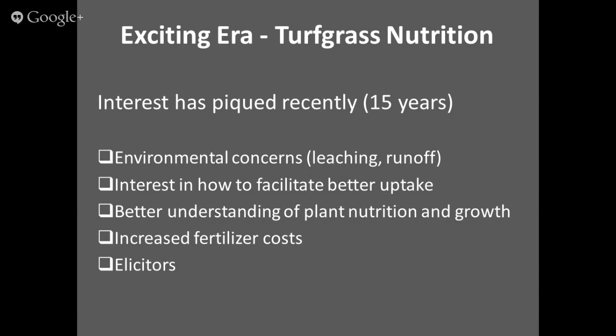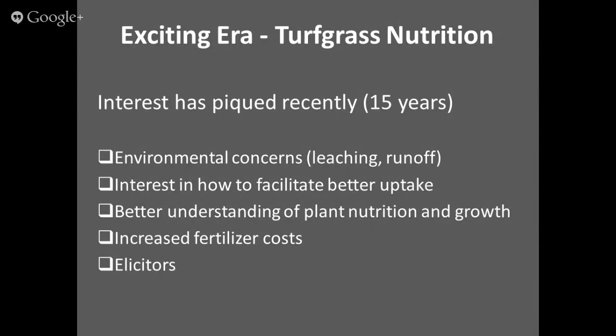We continue to understand plant nutrition and growth — what plants need to maximize productivity. With increased fertilizer costs, where we can improve efficiency we can save money. There's been more research done in the last 10 to 15 years on elicitors. Elicitors can be used in combination with various nutrient sources to improve plant health under stress and help with areas like disease management. The law of the minimum of plant nutrition states that plants need all essential nutrients and none can be substituted for one another, mandating a complete and balanced approach to fertilization.